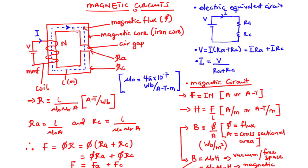As the flux flows through the magnetic circuit, a magnetic potential drop is developed across each section of the circuit. If the circuit is homogeneous and has a uniform cross-section, then the magnetomotive force per meter length of the magnetic circuit is said to be the magnetic field intensity, represented as H, equal to the MMF divided by the length of the magnetic circuit, measured in amperes per meter.